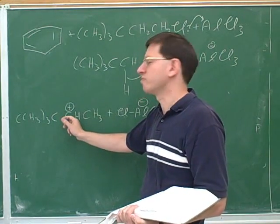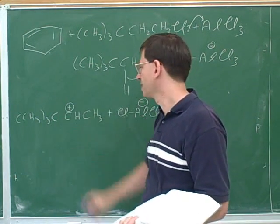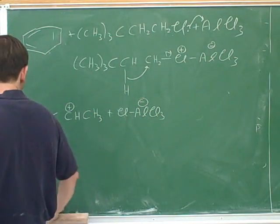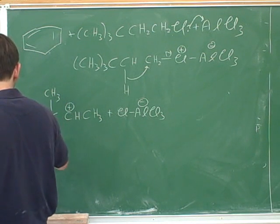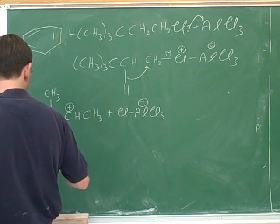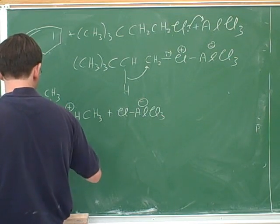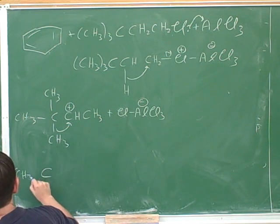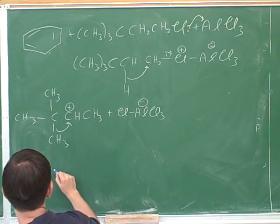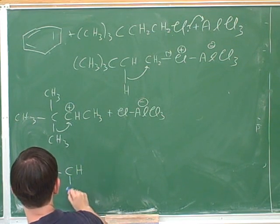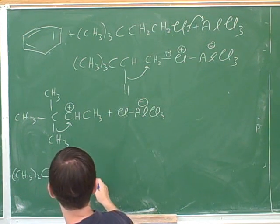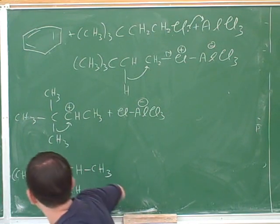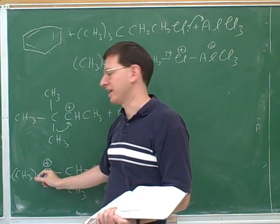So you're suggesting that we would rearrange to put the primary charge on this carbon. But it would really even prefer to be on this carbon. But even if it's on that carbon, you can't attack that carbon. So if now we do an alkyl shift, now we've made a tertiary carbocation.